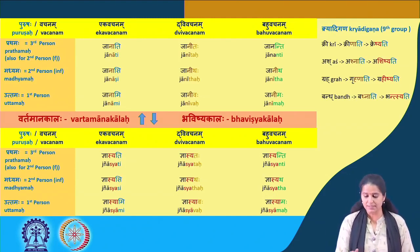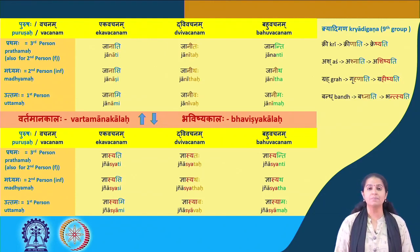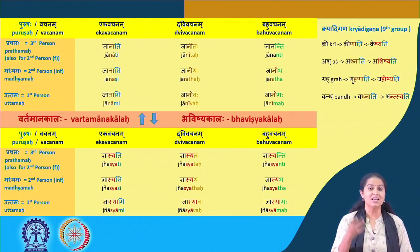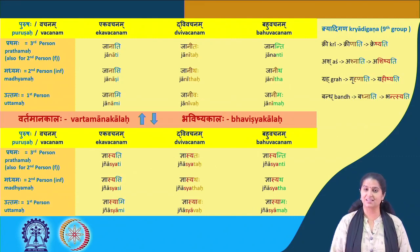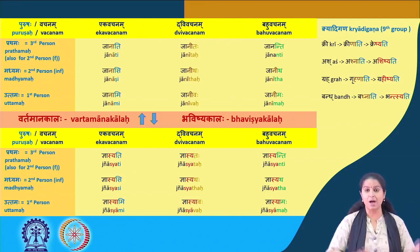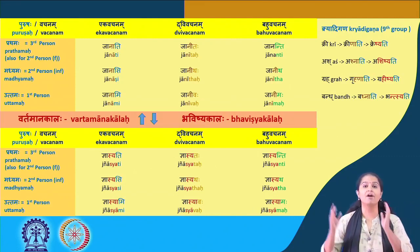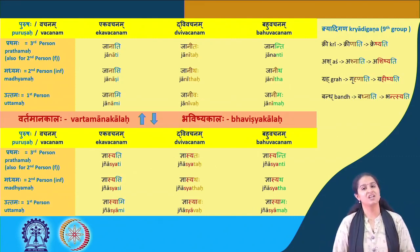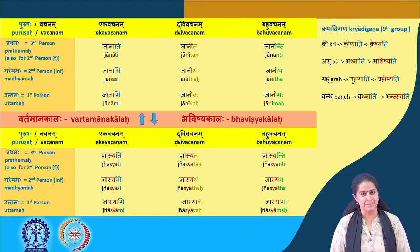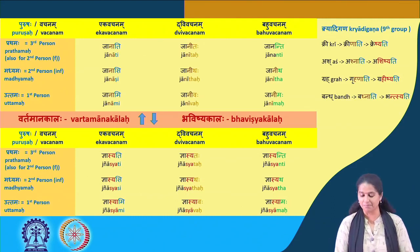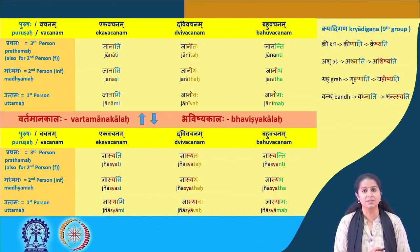Let us look at the verb in the future tense: jnasyati, jnasyataha, jnasyanti, jnasyasi, jnasyataha, jnasyataha, jnasyami, jnasyavaha, and jnasyamaha.